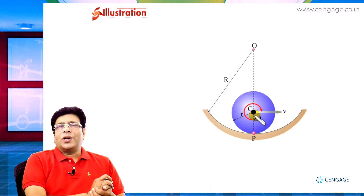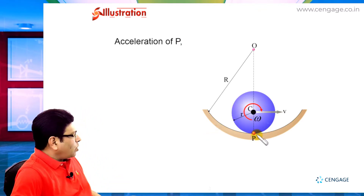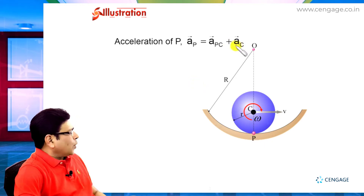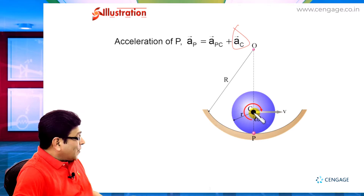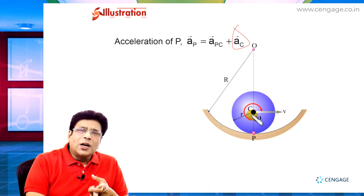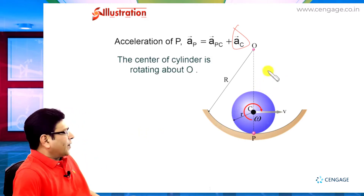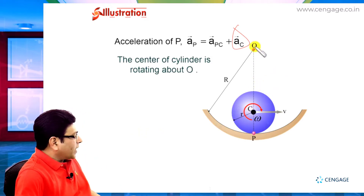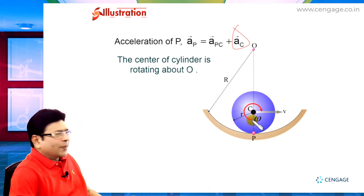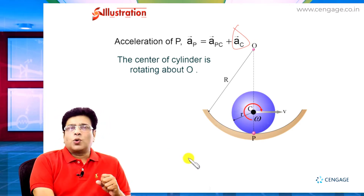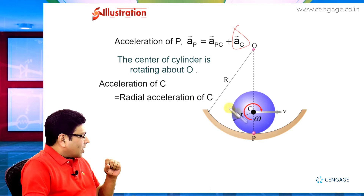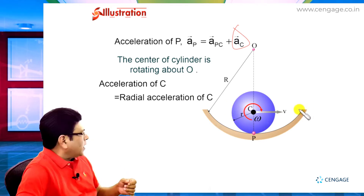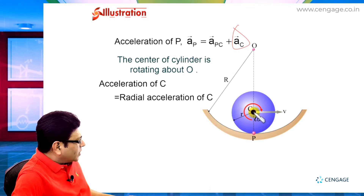Let us write the vector equation of acceleration of point p: acceleration of point p equals acceleration of point p with respect to c, plus acceleration of c. First, we consider the acceleration of point c. The center is rotating about O, and the radius of rotation of this center is equal to capital R minus small r. So the acceleration of point c is the radial acceleration of c, directed towards O.